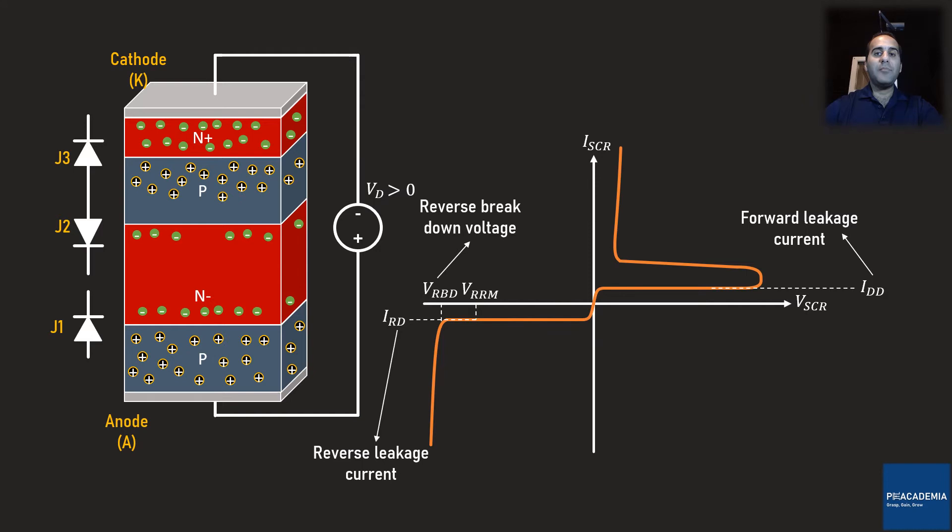If this forward voltage increasing continues, we get to a point at which most of the free electrons in the N minus semiconductor are recombined by the holes. And at the same time, more holes are diffused into the N minus semiconductor. Therefore, the holes now outnumber the free electrons in the N minus semiconductor, and the N minus semiconductor is inverted to a P-type semiconductor. This process is called inversion.